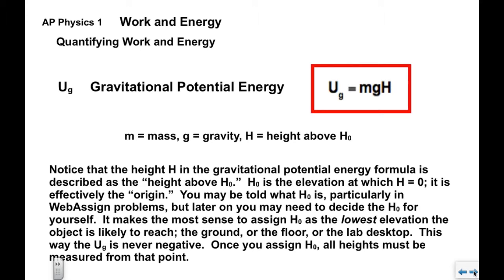You may be told what H sub zero is, particularly when you do a webassign problem. Later on, you may need to decide H sub zero for yourself. It makes the most sense to assign H sub zero as the lowest elevation that the object is likely to reach, like the ground or the floor, maybe the lab desktop if you're doing an experiment. This way, the gravitational potential energy is never negative. Once you assign H sub zero, all the heights in the problem must be measured from that point.